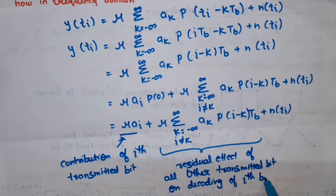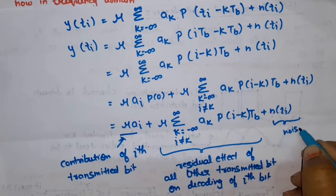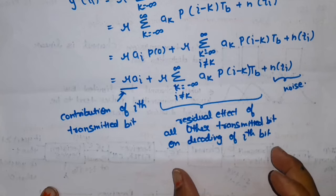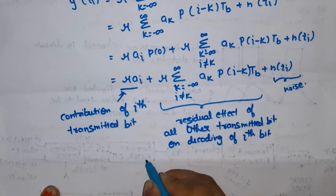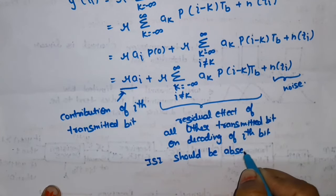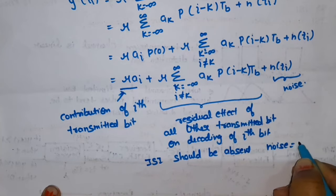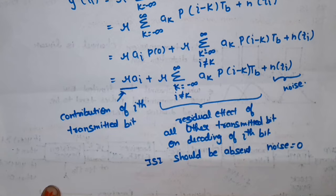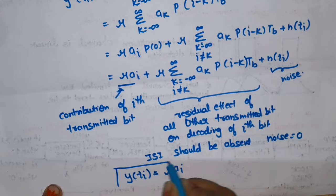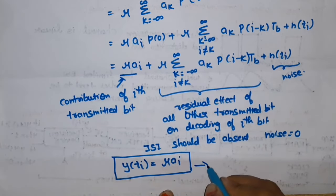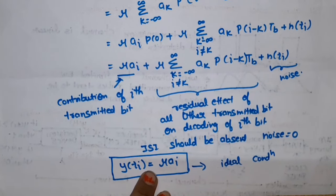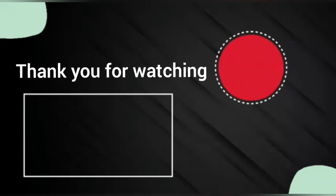For an ideal system, ISI should be absent and noise should equal zero. If both conditions are satisfied, then the sampled output y(ti) = μ·ai, which means we can perfectly reconstruct the original signal. This represents the ideal condition when ISI and noise are both absent.